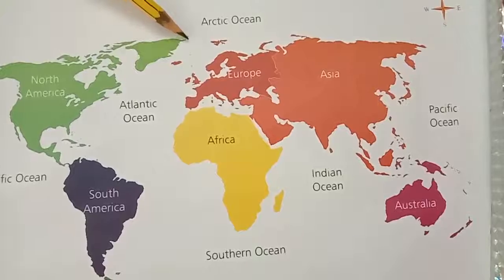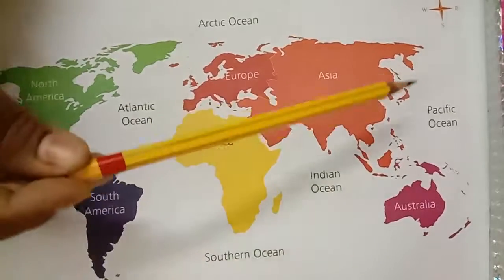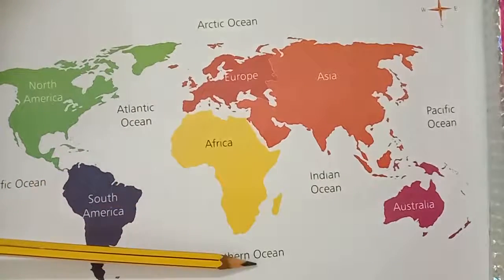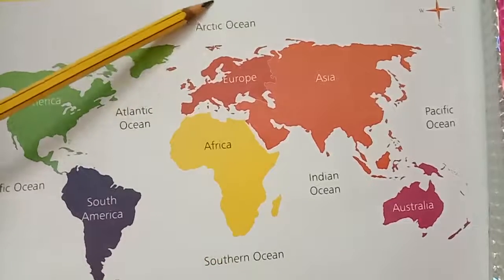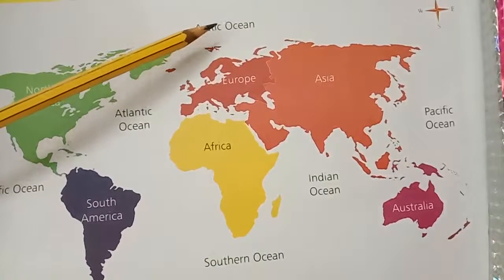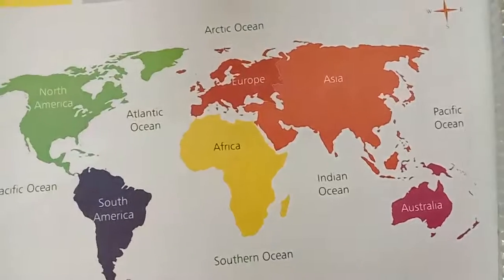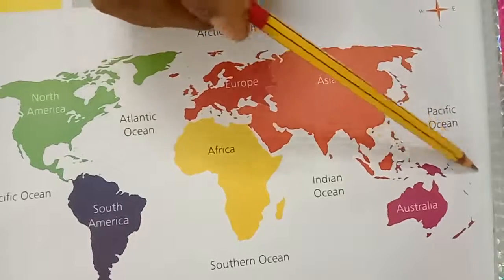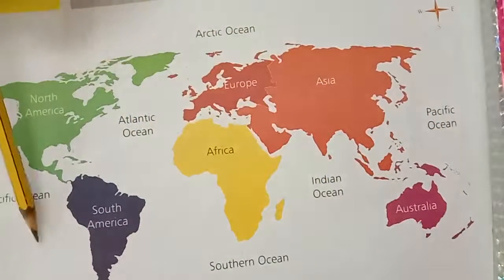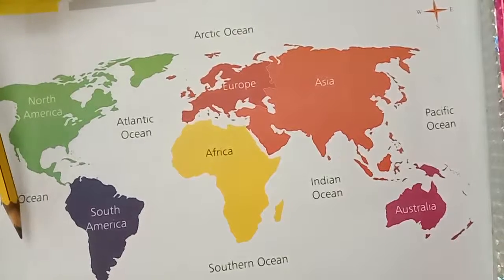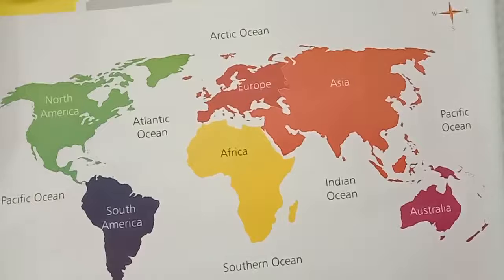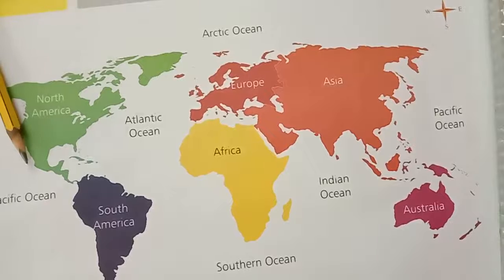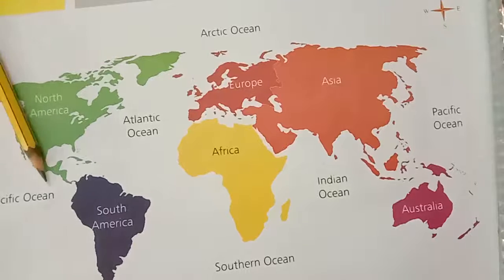There are five oceans. Pacific Ocean, Atlantic Ocean, Indian Ocean, Southern or Antarctic Ocean, and Arctic Ocean. Pacific Ocean is the largest ocean, covering one third of the earth's surface. It separates Asia and Australia from North and South America. The term Pacific means peaceful.